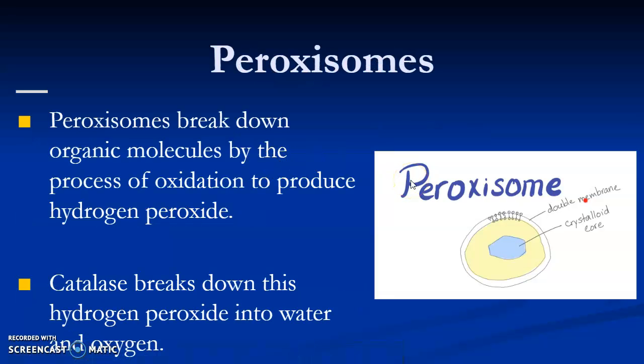Apoptosis is basically just cell death, and it involves lysosomes — it is completely normal. Peroxisomes break down organic molecules by the process of oxidation, which means that the molecule loses energy.